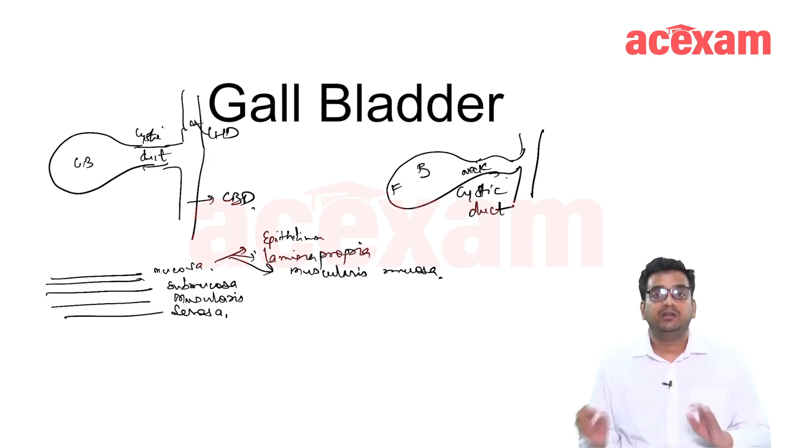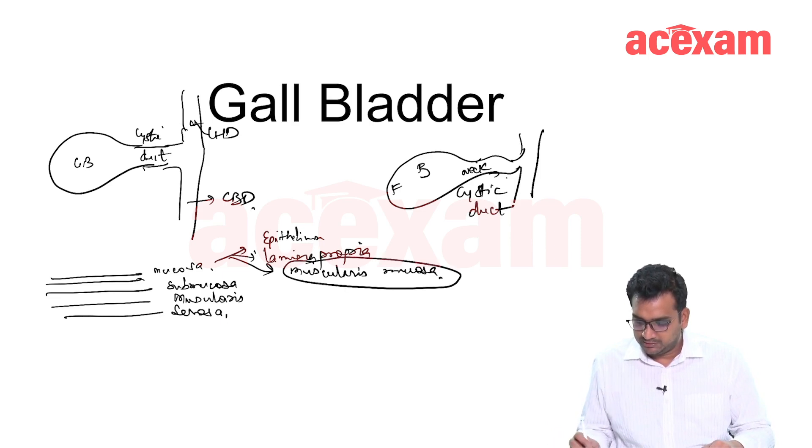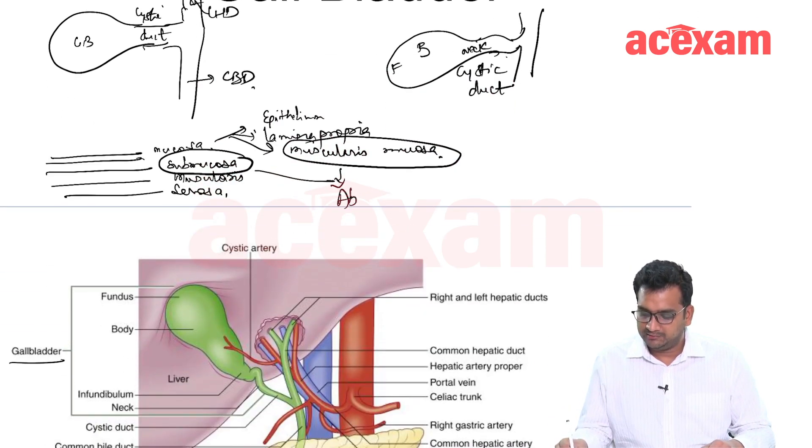This is normal in the GIT, but here in the gallbladder, this muscularis mucosa as well as this submucosa is missing. These two are absent in gallbladder. So this is very important to remember that the muscularis mucosa and the submucosa is absent in gallbladder.